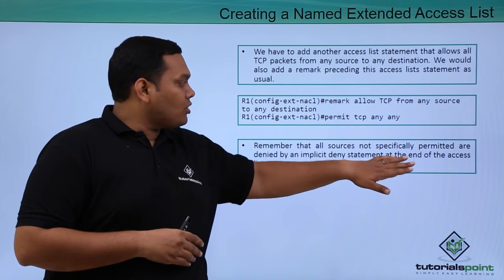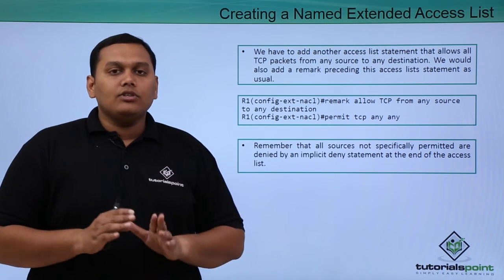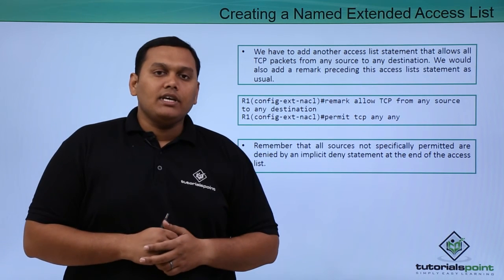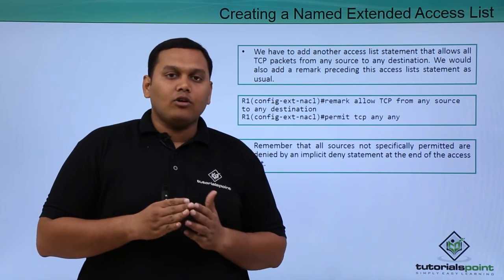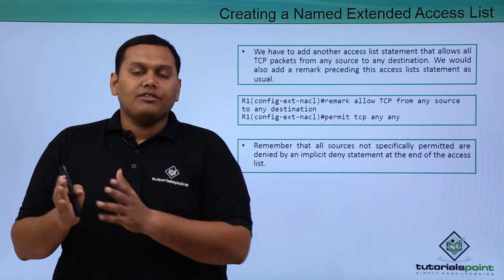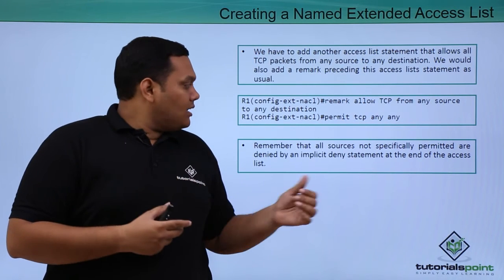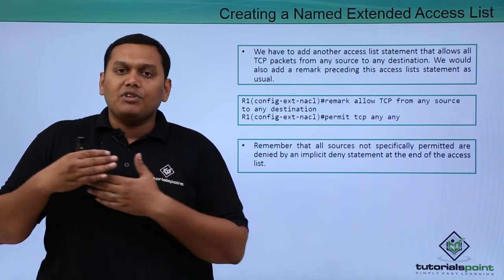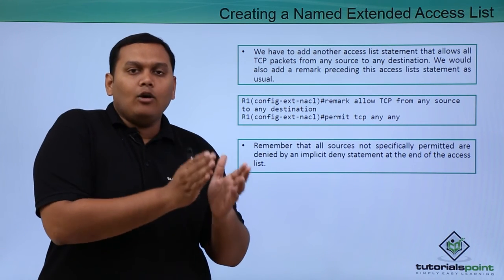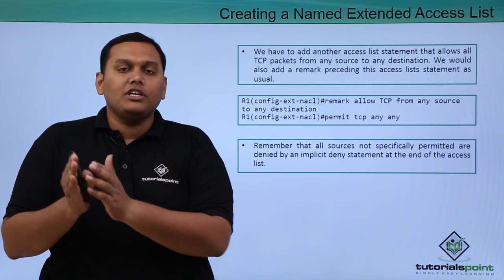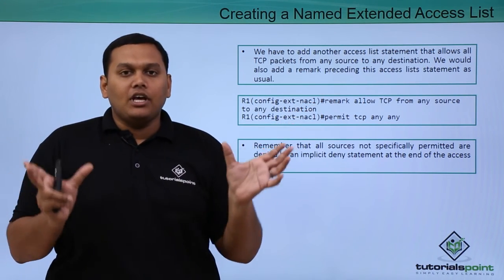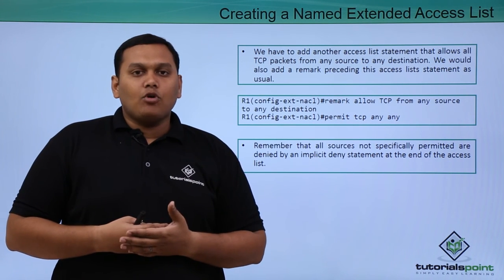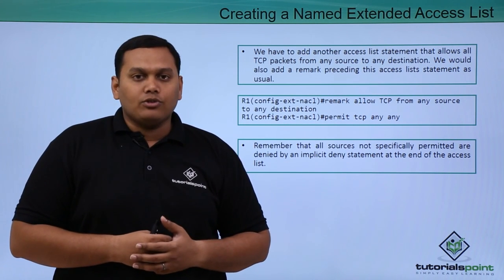Remember that all sources not specifically permitted are denied by the implicit deny statement. Here, we are permitting TCP and denying one specific IP address — sources not explicitly covered are implicitly denied only under certain conditions from source to destination. This concludes the named extended access list discussion; NAT and NAT types will be covered in the next videos.